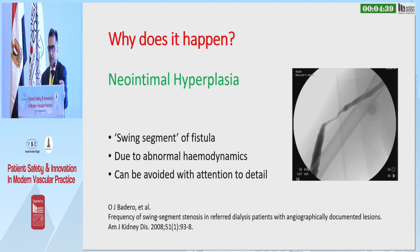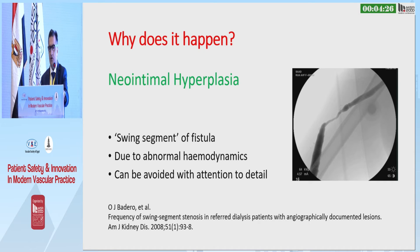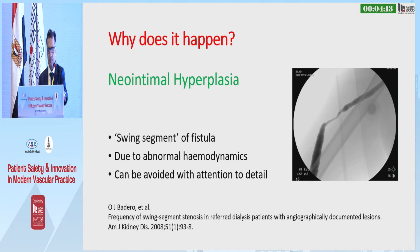Neo-intimal hyperplasia. I'll talk about the swing segment of fistulas — this is due to abnormal hemodynamics. With careful attention to detail, you can avoid the majority of these problems. Typically, this doesn't happen at the anastomotic site; it happens at the bend where the fistula is going upstream into the arm.